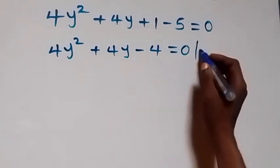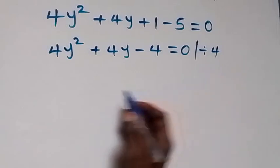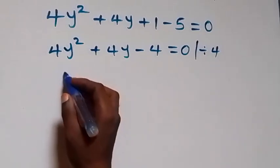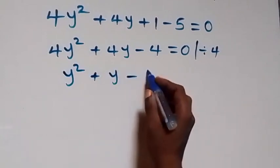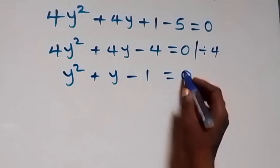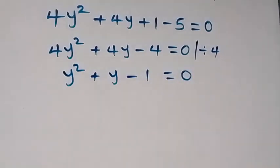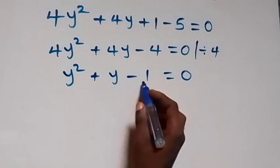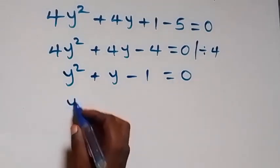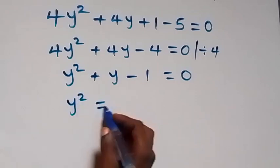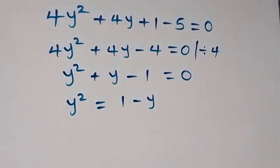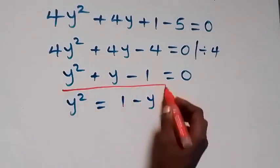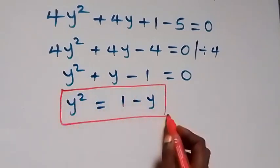We can divide through by 4, giving us y² + y - 1 = 0. Then let's make y² the subject, transferring y and -1 to the other side. So we have y² = 1 - y. We use this to find y raised to power 6.